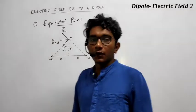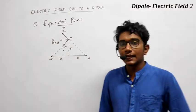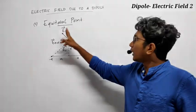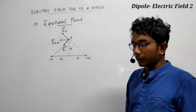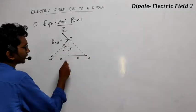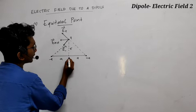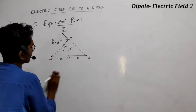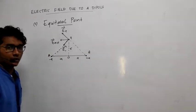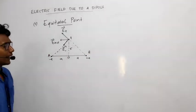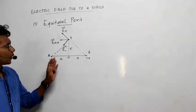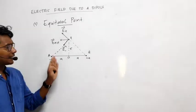Now we are going to talk about the electric field due to a dipole at an equatorial point. The equatorial point means it is perpendicular to the center. This is the center — this is A and this is point B. So again, the same thing we are considering: what will be the net electric field?